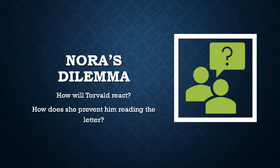Moving backwards: how is it that she prevents him from reading the letter? How does she put herself in this moment of suspension, this pause before Torvald finds out and everything is revealed?